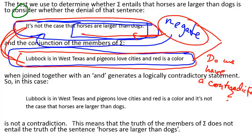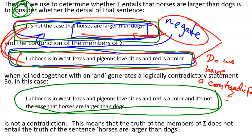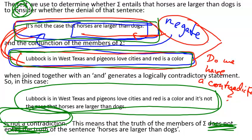One more time: the test is whether the set sigma, when joined with the negation of the conclusion, generates a contradiction. If so, then the conclusion is entailed by sigma. When we join the negation with sigma we get: 'Lubbock is in West Texas, and pigeons love cities, and red is a color, and it is not the case that horses are larger than dogs.' On inspection, that is not a contradiction — so the truth of the members of sigma does not entail 'horses are larger than dogs.'